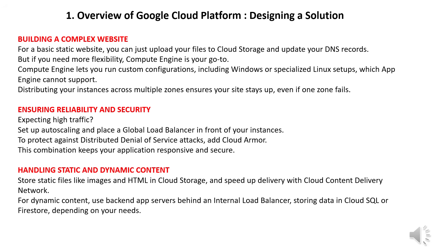Store static files like images and HTML in Cloud Storage, and speed up delivery with Cloud CDN. For dynamic content, use back-end app servers behind an internal load balancer, storing data in Cloud SQL or Firestore depending on your needs. You can use Cloud DNS or your existing DNS provider with GCP — building complex, reliable solutions is within reach.